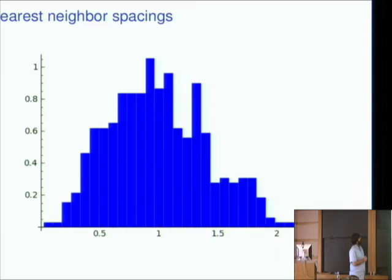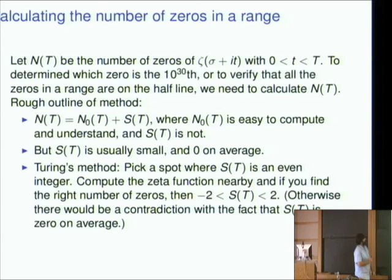So, if you like nearest neighbor spacings, we only have 400 zeros. So you can't tell much.